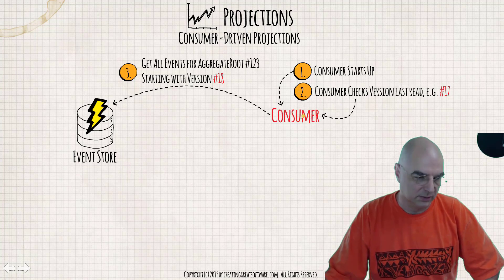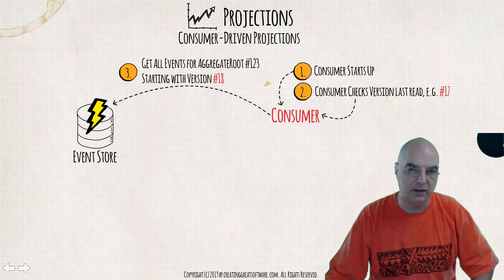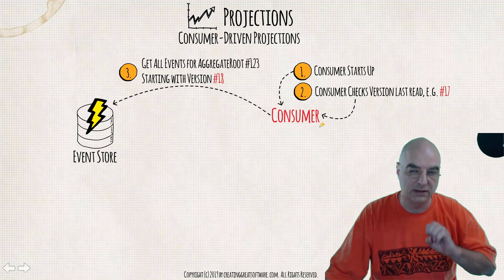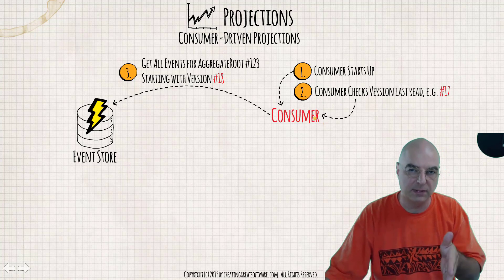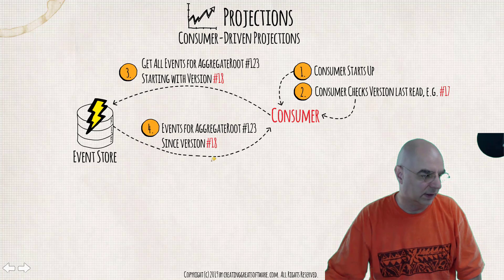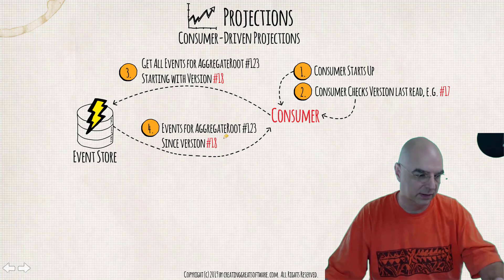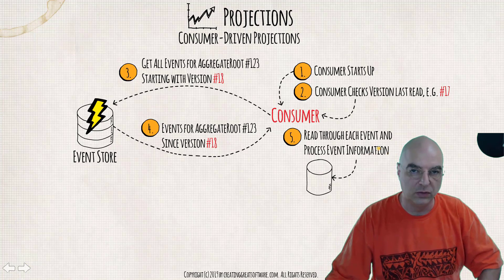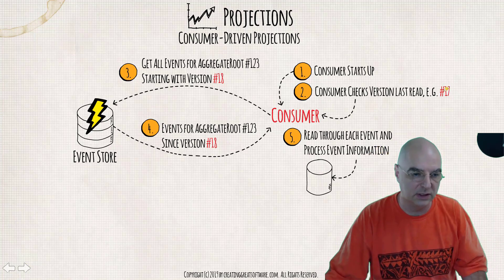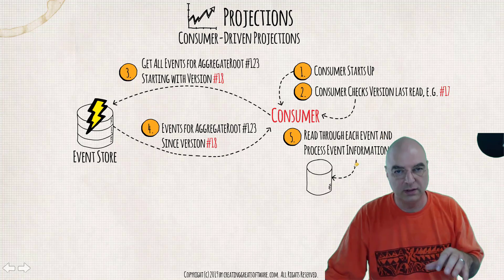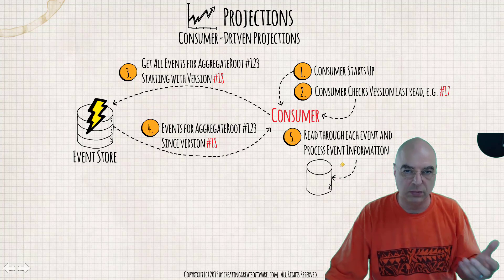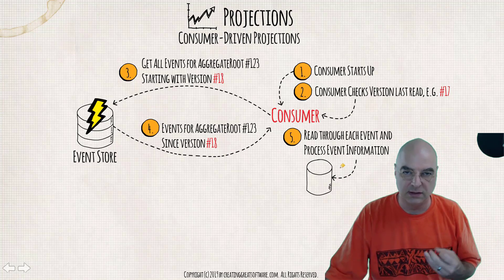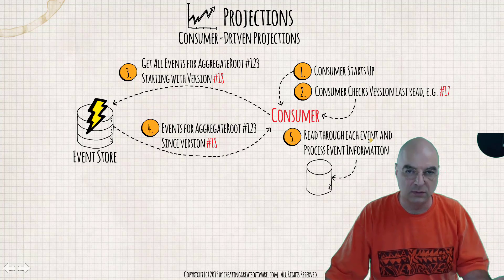The consumer will then go ahead and ask the event store to give it all the events that may have happened past version 17 — starting with version number 18 — and asking for all the events that have happened since then. The event store takes that request and provides all the domain events since version number 18 to the consumer. The consumer processes the new domain events just like the previous 17, and then it will usually store the analysis output or report into some kind of persistence mechanism — maybe PDF files, reporting files, or it updates a SQL Server or MySQL database after completing the analysis.